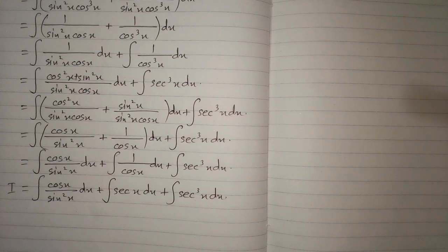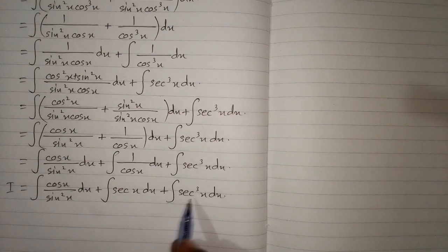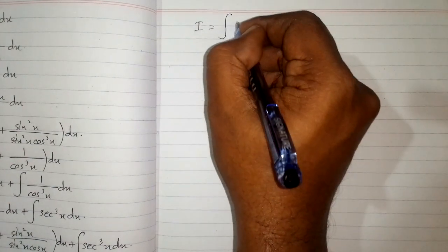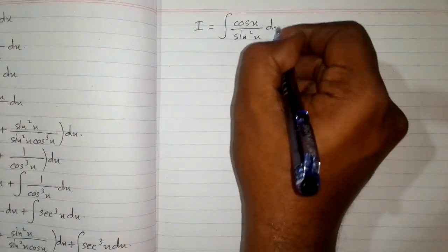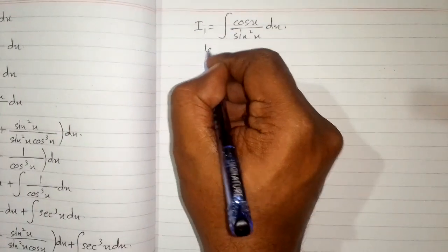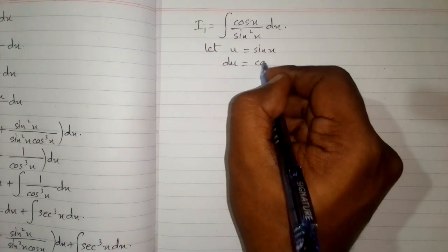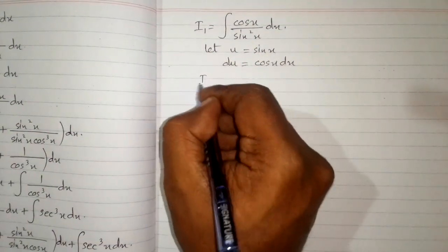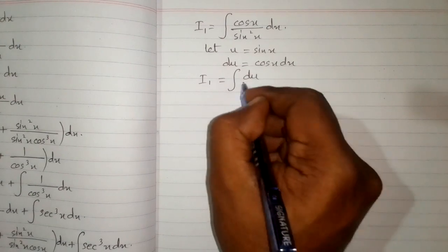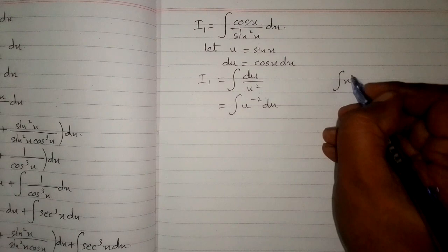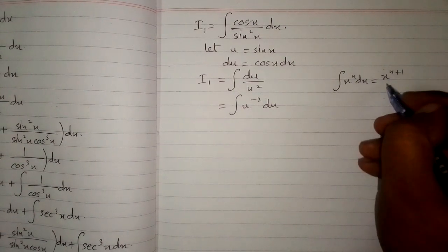This integral is I, and we will integrate each term separately. First we integrate cos x upon sine squared x dx. Suppose this integral is I1. Let u equal sin x, so the differential du equals the derivative of sin x, which is cos x, multiplied by dx. So the integral I1 can be written as the integral of du upon u squared, which is the integral of u to the power minus 2 du. We know that the integral of x to the power n dx equals x to the power n plus 1 upon n plus 1.